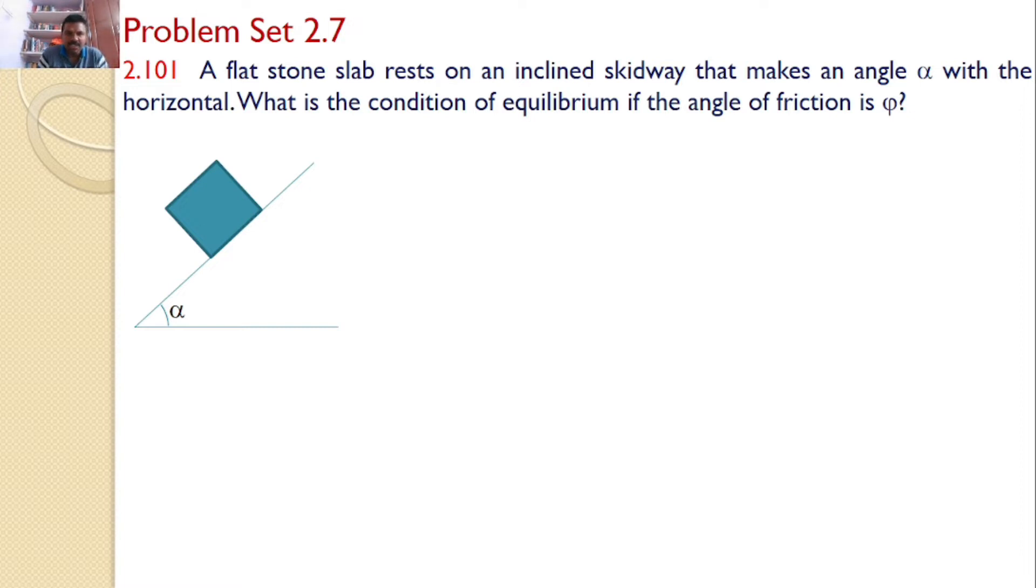A flat stone slab rests on an inclined skidway that makes an angle alpha with the horizontal. What is the condition of equilibrium if the angle of friction is phi? There is a stone resting on an inclined plane, and our interest is to find the value of alpha so that the total body is under equilibrium.